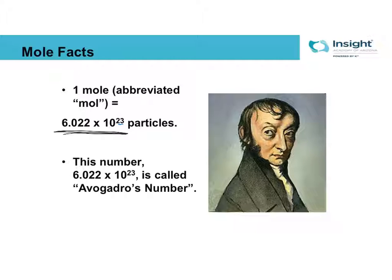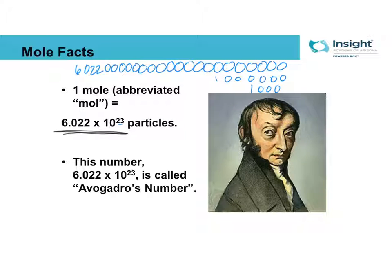Because this 10 to the 23rd, that means it's 6 with 23 numbers after it. The first 3 are going to be 022, but then there's going to be 20 zeros. So it's a 6 and then 23 numbers afterwards.